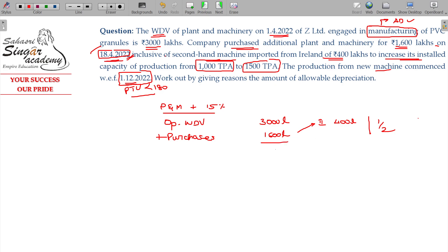So 4600 lakhs, minus, as this one is eligible for half year depreciation, put-to-use less than 180 days, balance 3000 lakhs. This one is eligible for 15%, 450.